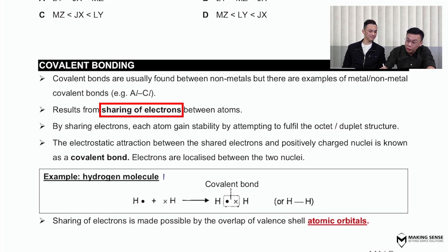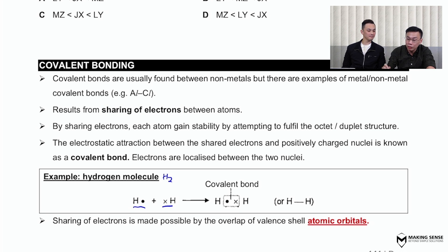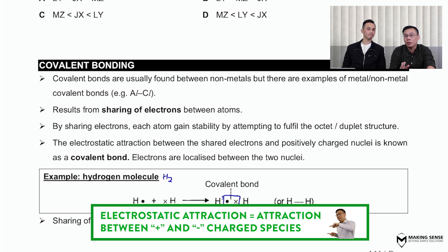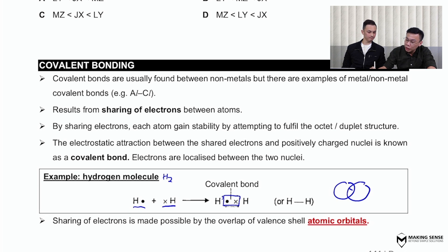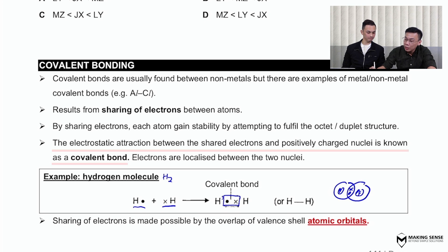If you were to look at the hydrogen molecule, the one valence electron from one hydrogen atom is going to pair up with another valence electron from the other hydrogen atom, forming what we call a covalent bond. A bond is always an electrostatic attraction between a region that is positively charged and a region that is negatively charged. So a covalent bond is better defined as the electrostatic attraction between the shared pairs of electrons and the two positively charged nuclei.